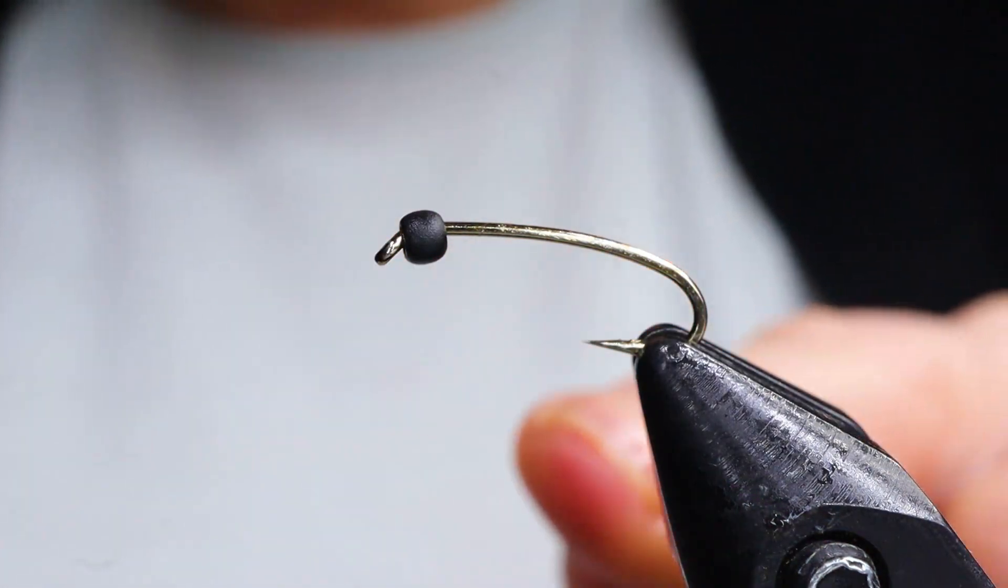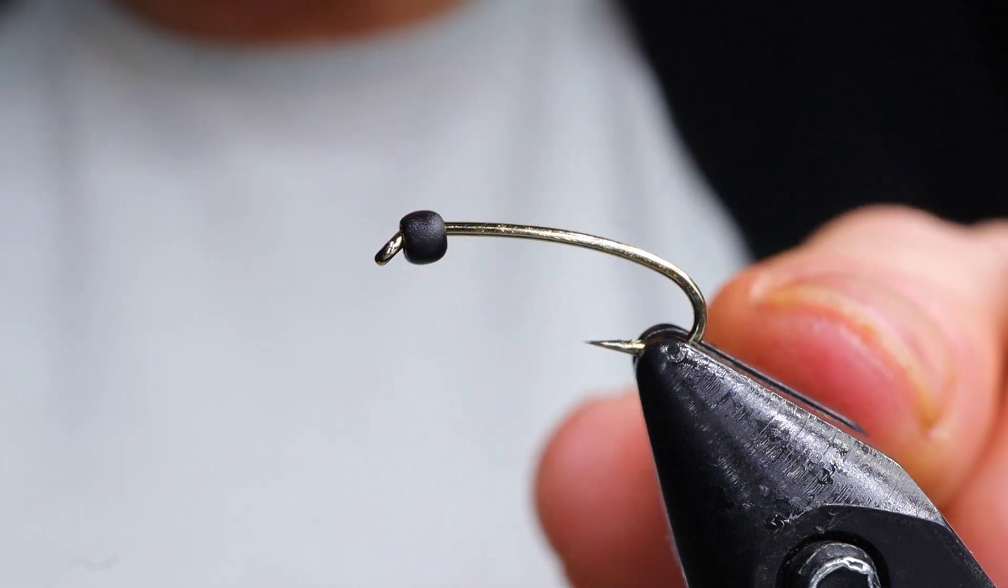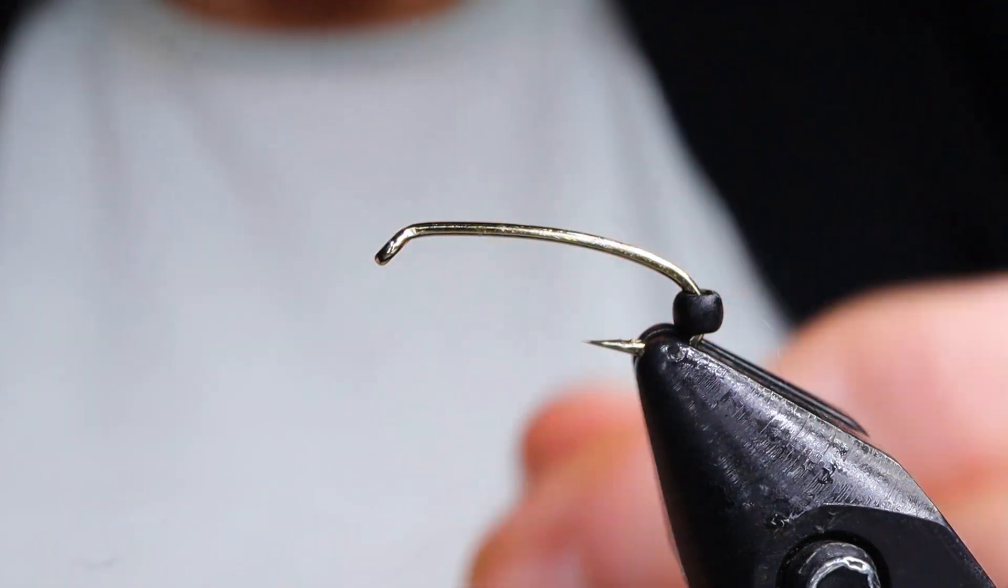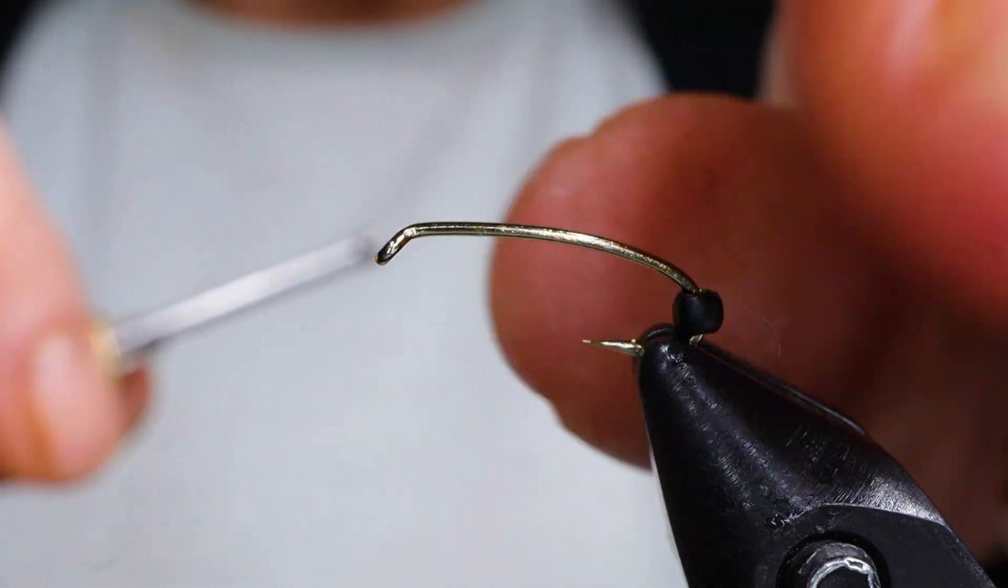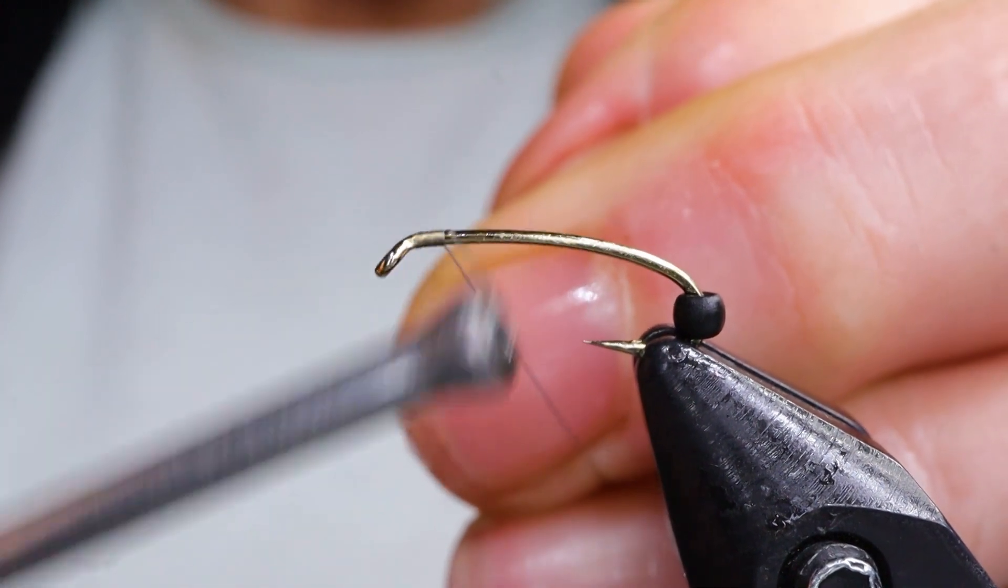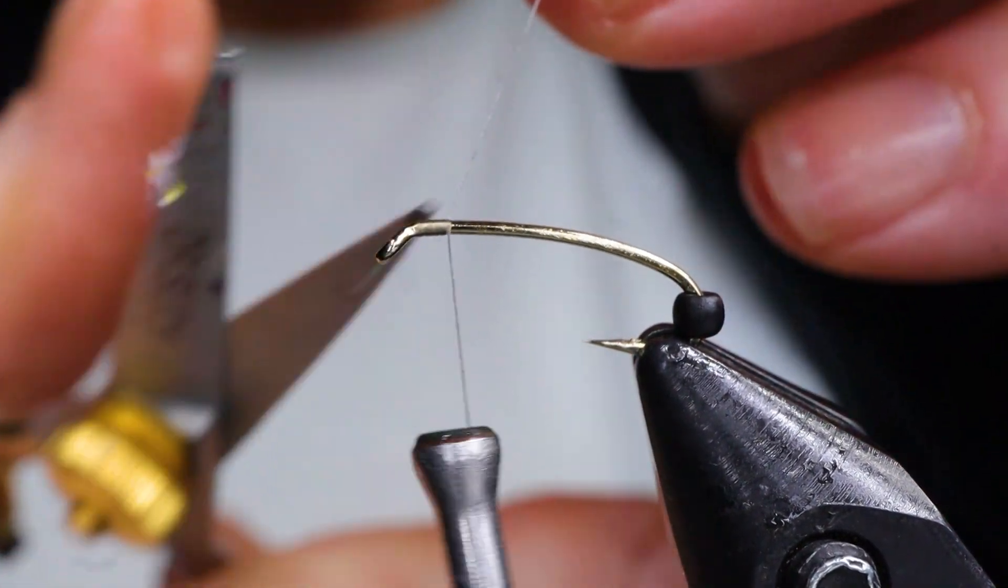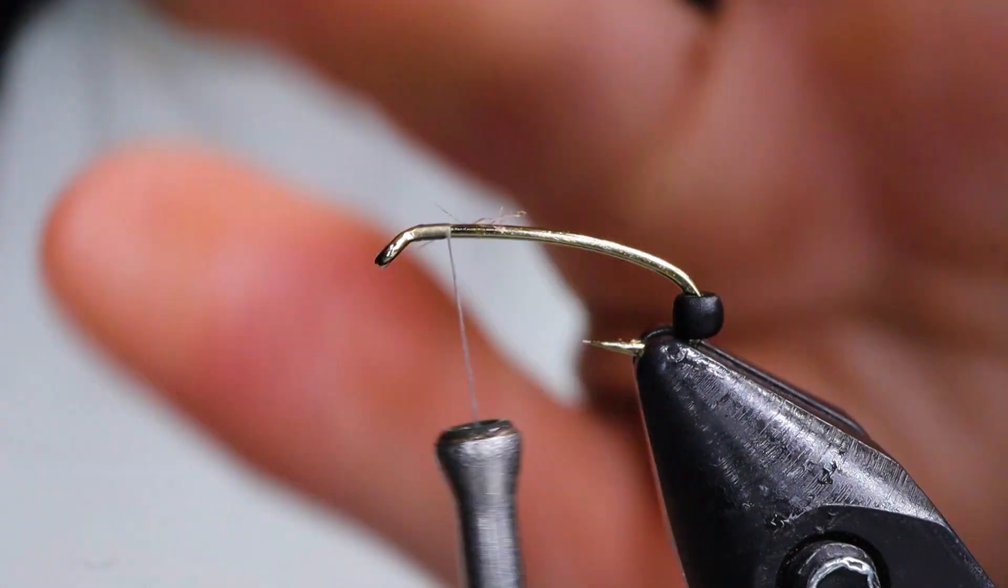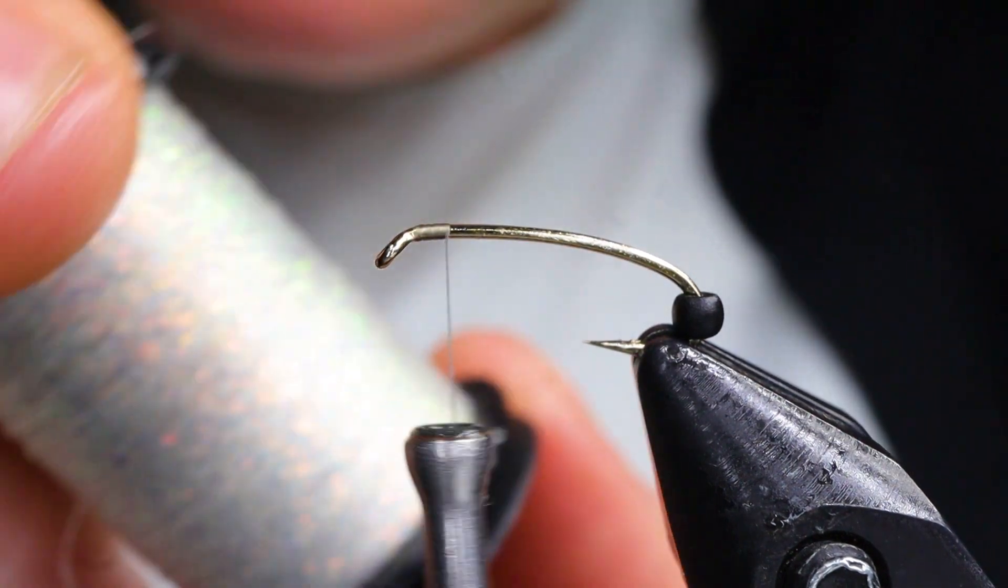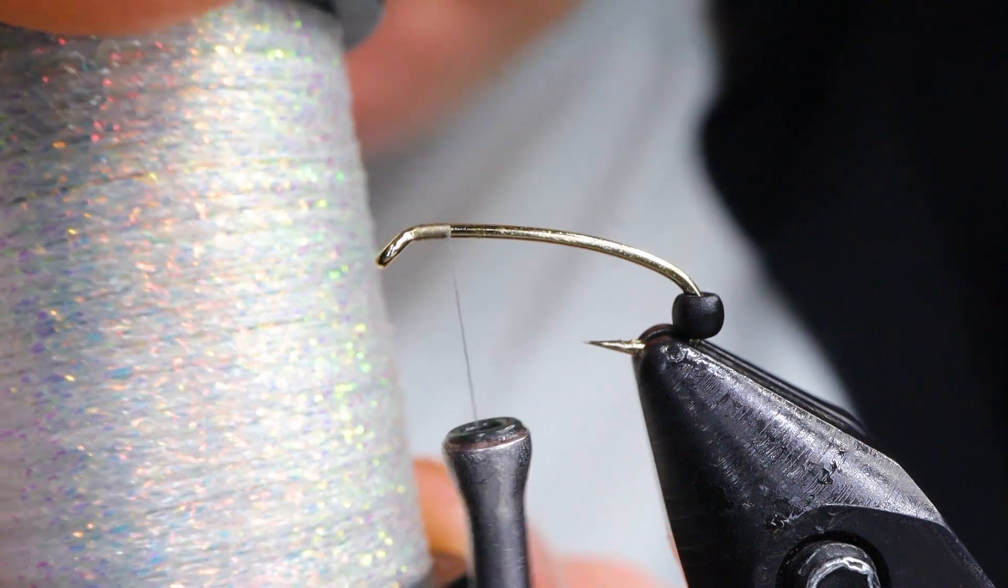So I've gone ahead and I've slid my bead onto the hook with the wide end of the bead facing forward so I can slip it over my gill. I'm just going to push the bead back. Just start your thread on the hook right at the front. Five wraps or so.